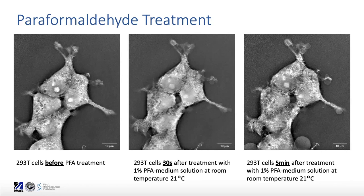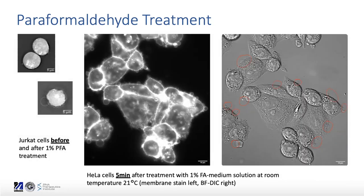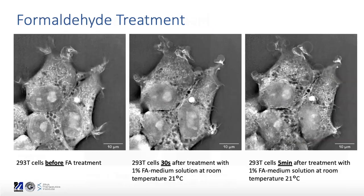This effect is not very cell-type dependent. I've done this with Jurkat cells as well as HeLa cells — the cell line used at the beginning — and T293 T-cells shown on the first slide. The difference between paraformaldehyde and formaldehyde isn't large. In images of fixed 293T cells treated with formaldehyde instead of paraformaldehyde, those blebs show up as well, though not as large, and you can also see the interior of the cells changing quite a bit.